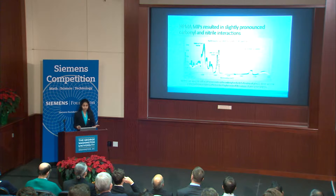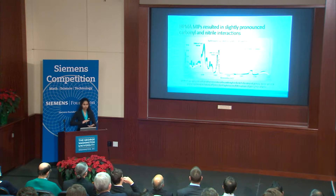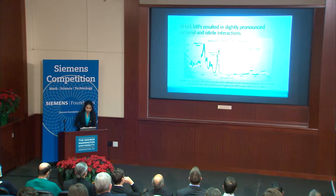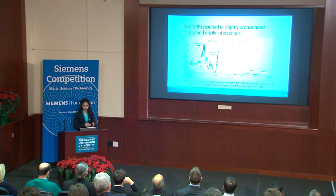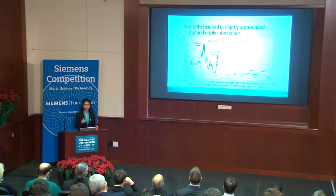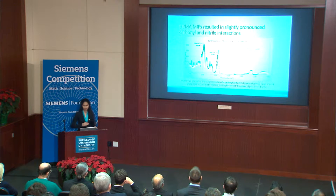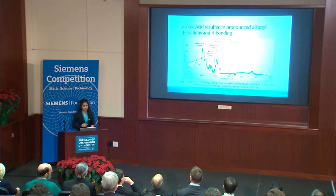The next step was to look at the chemical composition of the polymers using FTIR to see what effect the imprinting process had on composition. For the hydroxypropyl methacrylate polymer, there weren't many changes or enhancements in the 2600 to 3600 wavenumber range. Since MIPs rely on a non-covalent binding mechanism, hydrogen bonding functional groups are extremely important — and there wasn't a significant difference observed for HPMA polymers.